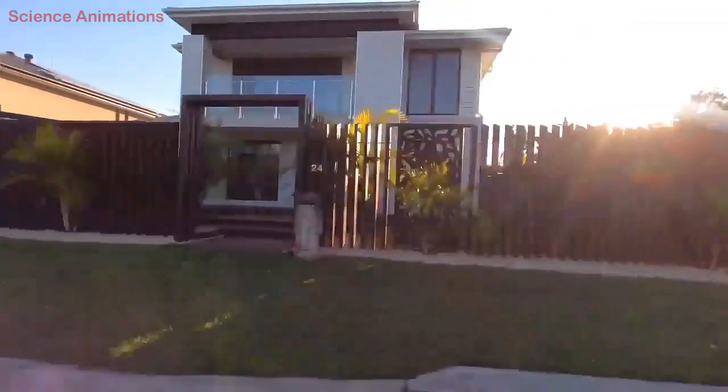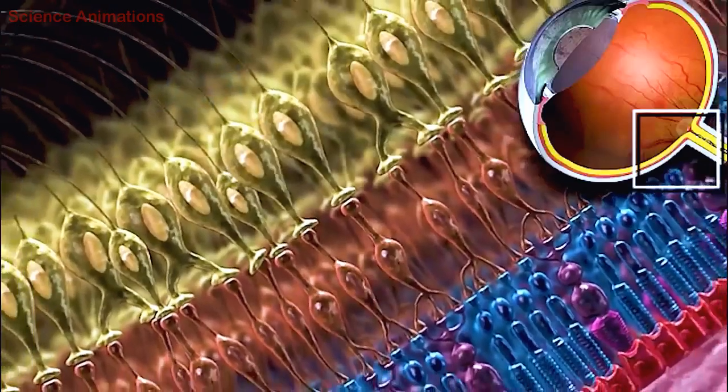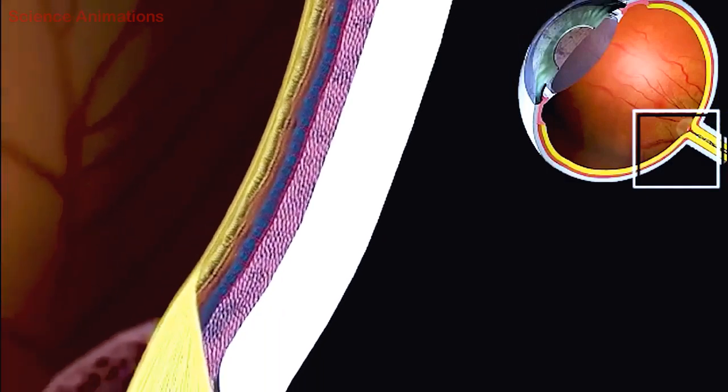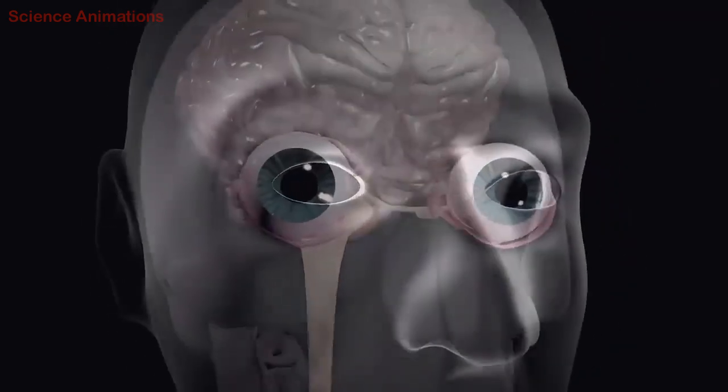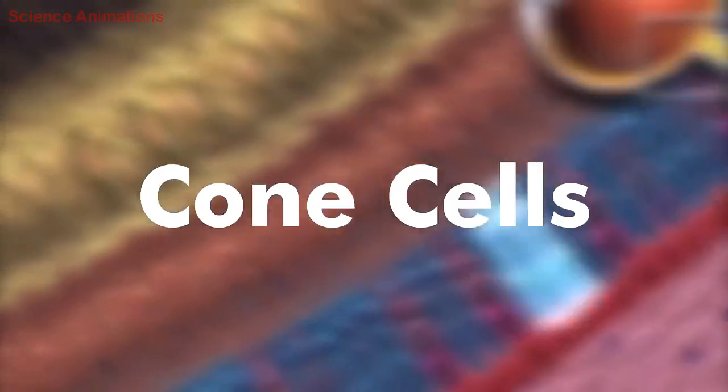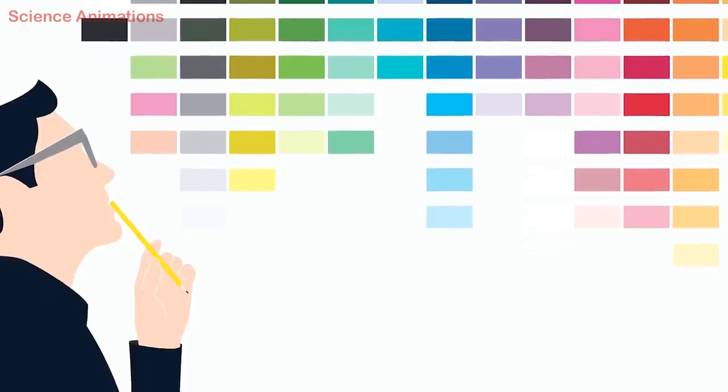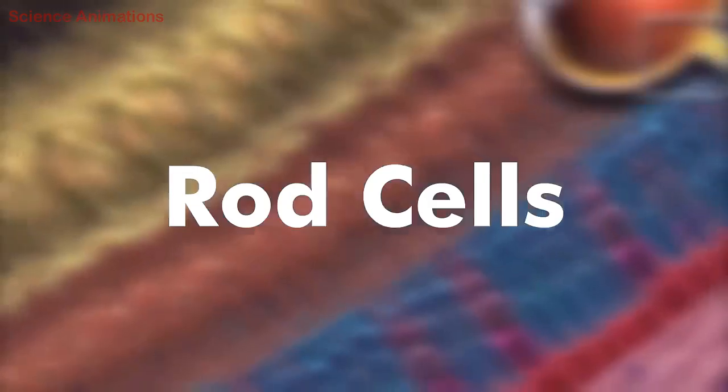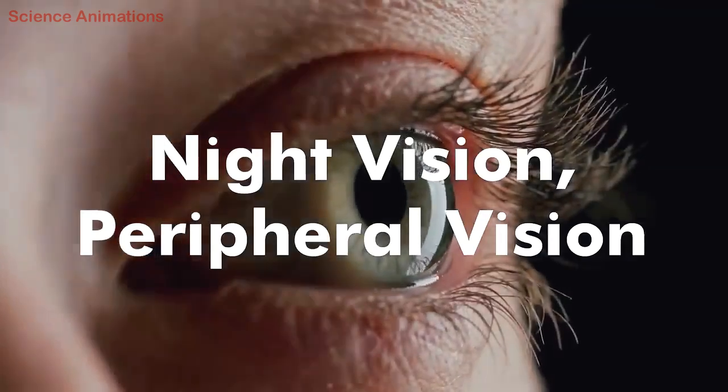The photoreceptors in the retina convert images into electrical signals. These signals reach the brain through the optic nerve. Through cone cells, we can identify colors and visualize objects in detail.